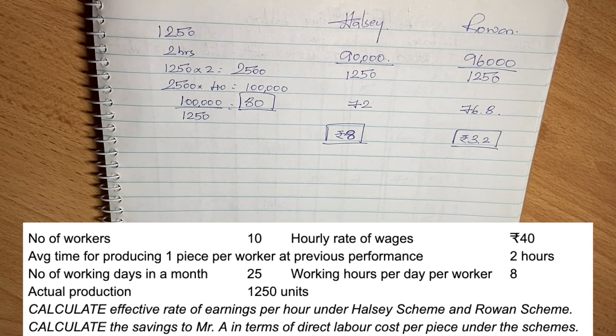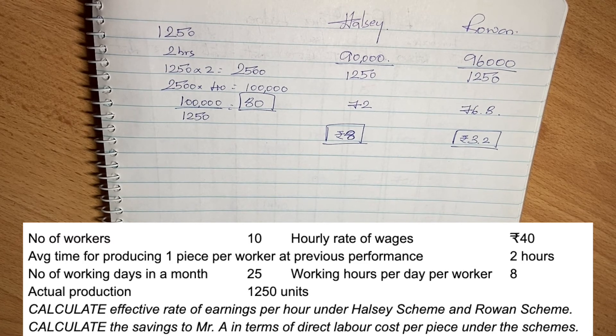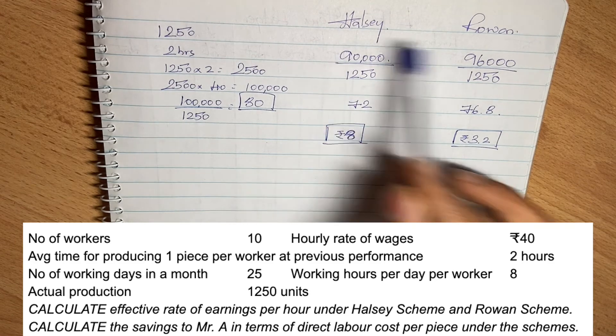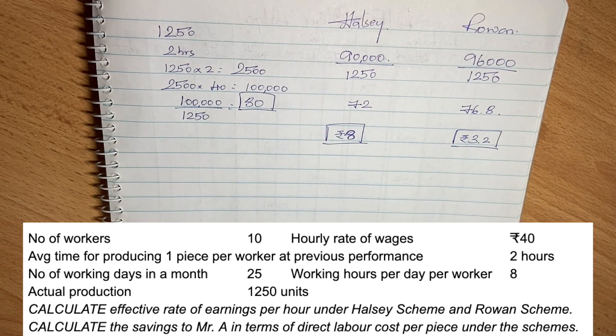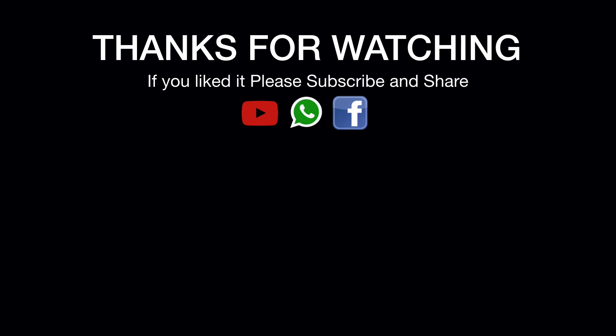This is the calculation of labor rate per hour and also the calculation of savings per piece as a result of implementing the Halsey and Rowan incentive systems. I hope you understand this concept. Thank you for watching this video — please share it, and see you next time.